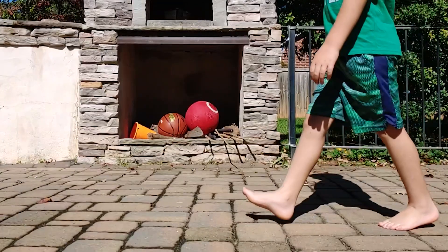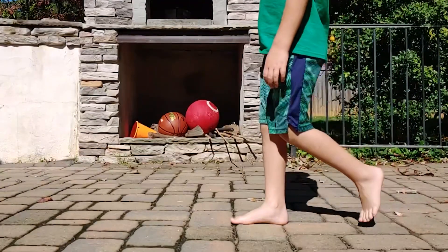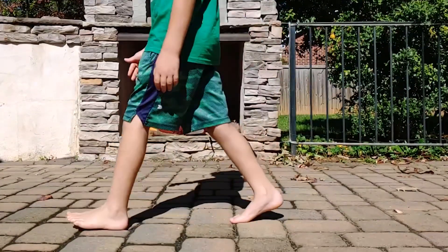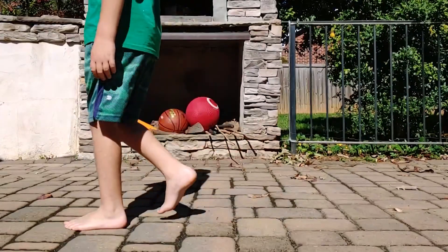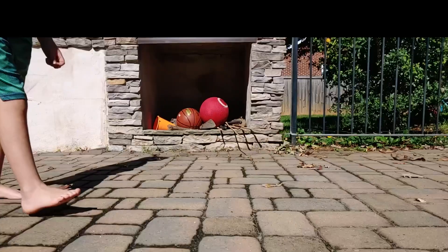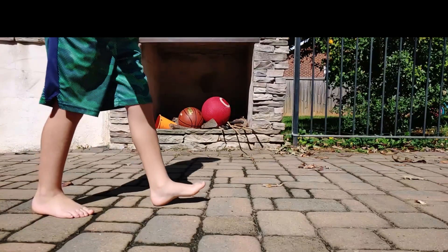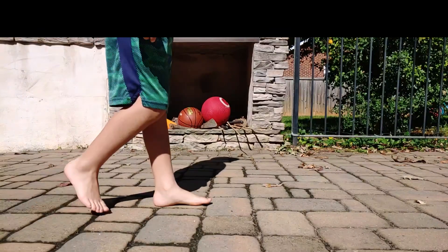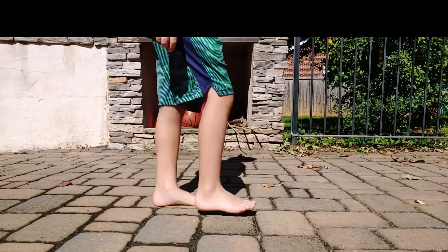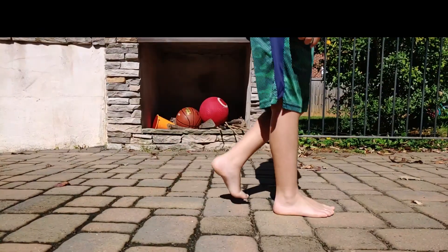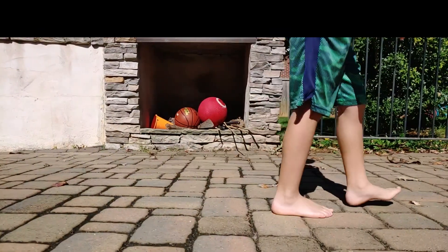On number two, we look at the initial foot contact. When his foot swings through and his foot touches the ground the first time, the thing that hits first is his heel, and he gets three points on both his right and his left leg.